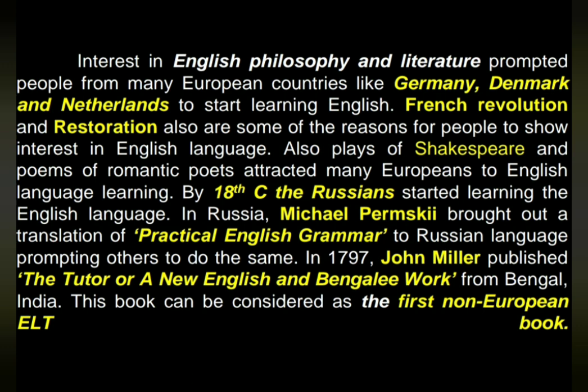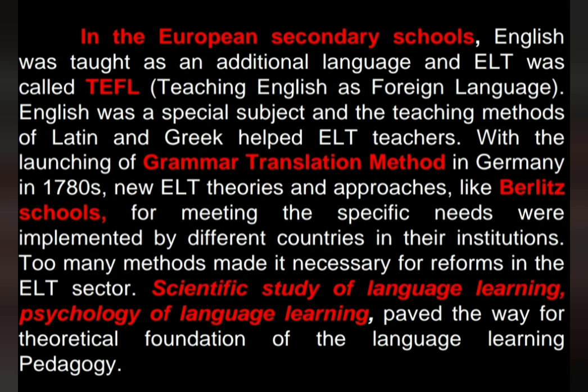By the 18th century, the Russians started learning the English language in Russia. Michael Bemsky brought out a translation of practical English grammar to the Russian language, prompting others to do the same. In 1797, John Miller published The Tutor or a New English and Bengali work from Bengal, India. This book can be considered as the first non-European ELT book.